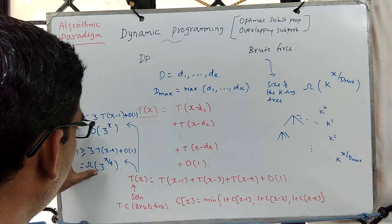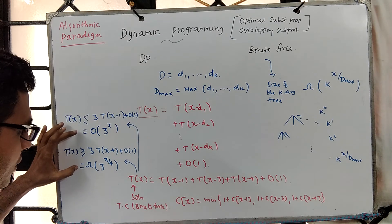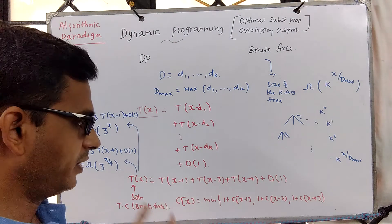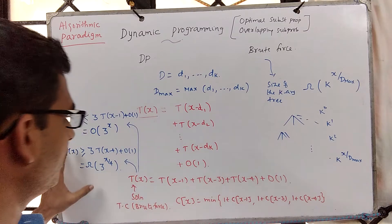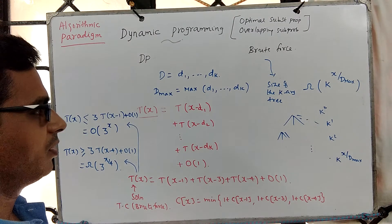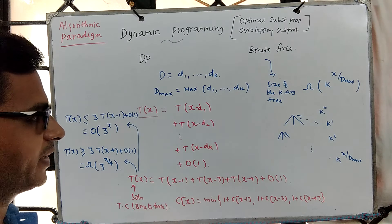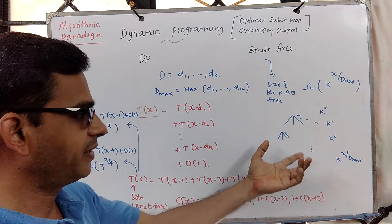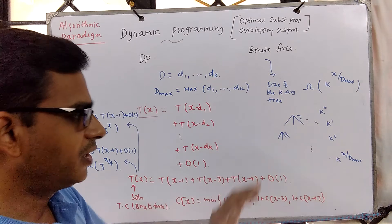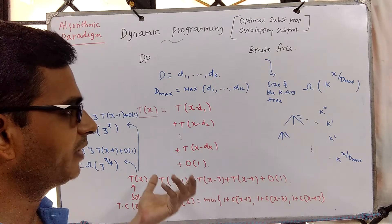The solution to this recurrence is packed between these two complexities — both are exponential in the input value x — meaning the brute force algorithm runs in exponential time. This is true for almost all brute force cases. One can estimate complexity either through the recurrence or by looking at the recursion tree, identifying where the first zeros start, and noting the complete k-ary or ternary subtree up to that point.